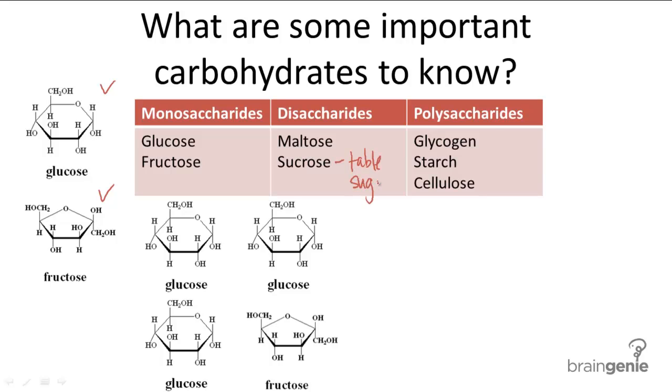Polysaccharides are a little more complicated. Glycogen, starch, and cellulose are all made of chains of glucose, except they have different structures and different properties. The first two store energy, whereas the last one is a component of plant cell walls.